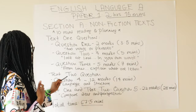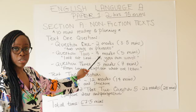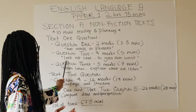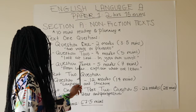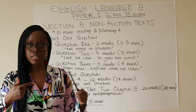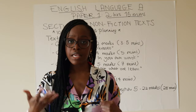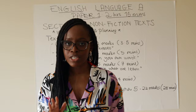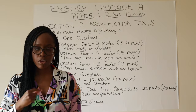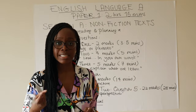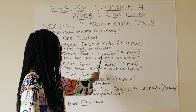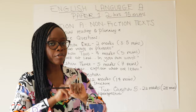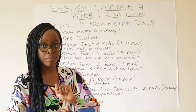Question two is also related to Text 1 and is worth four marks. The wording typically asks you to look at given line numbers and then discuss something in your own words. If the question asks for your own words, you cannot quote directly from the text — you interpret it using your own phrasing. This question is worth four marks; spend five minutes on it and move on. Always keep an eye on the time.